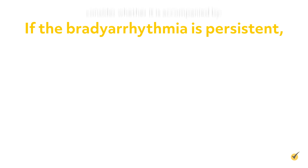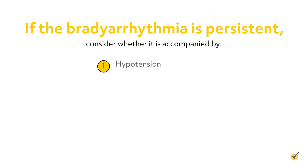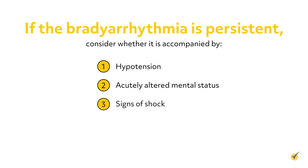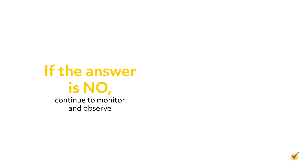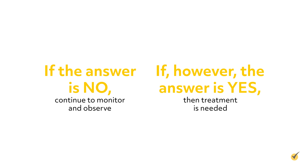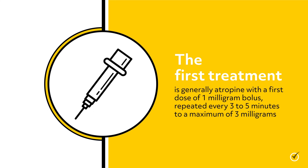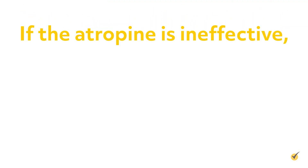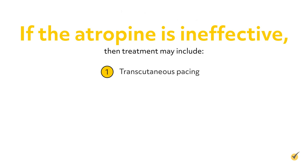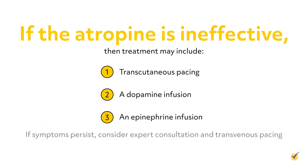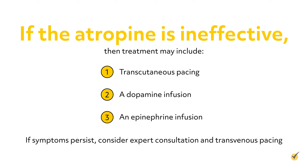If the bradyarrhythmia is persistent, consider whether it is accompanied by hypotension, acutely altered mental status, signs of shock, ischemic chest discomfort, or signs of heart failure. If the answer is no, continue to monitor and observe. If the answer is yes, treatment is needed. The first treatment is generally atropine with a first dose of a 1 mg bolus repeated every 3-5 minutes to a maximum of 3 mg. If atropine is ineffective, treatment may include transcutaneous pacing and/or a dopamine infusion or an epinephrine infusion. If symptoms persist, consider expert consultation and transvenous pacing.